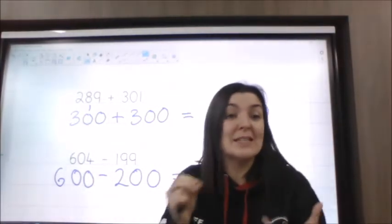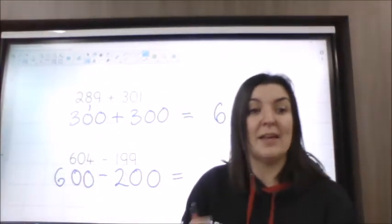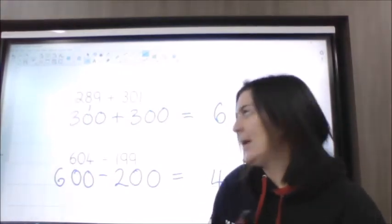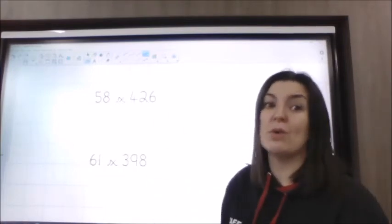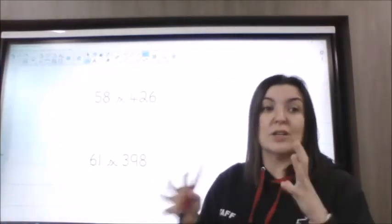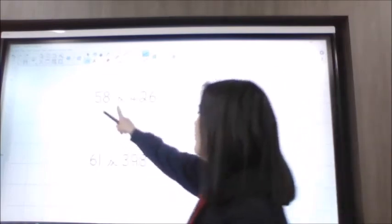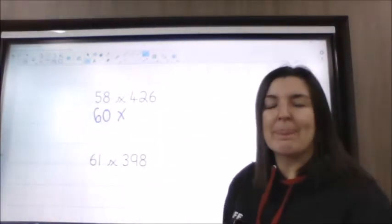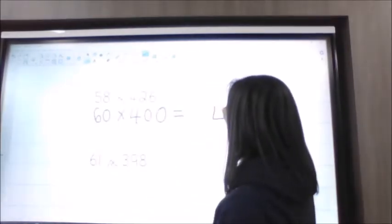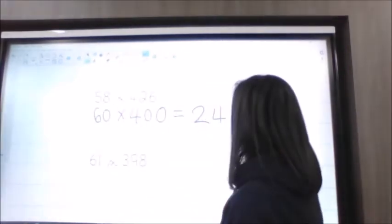So have a look at how you did — you might have done something slightly different. That's the thing with estimating. This next one's a multiplication one. But if I make it so that I've got zeros, I could do it really easily. So I've got 58, which I would round to 60, multiplied by 426. I think I'd go to just 400 when I'm estimating. Then I could do 6 times 4, which I know is 24, and then put my three zeros back on.